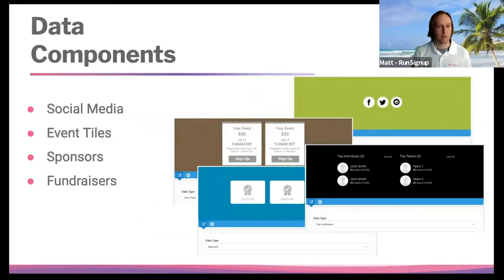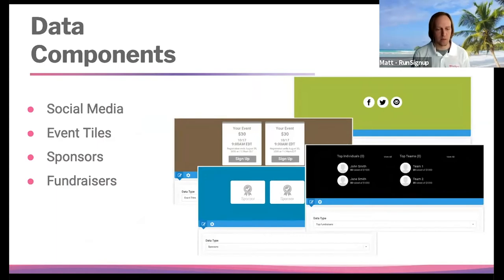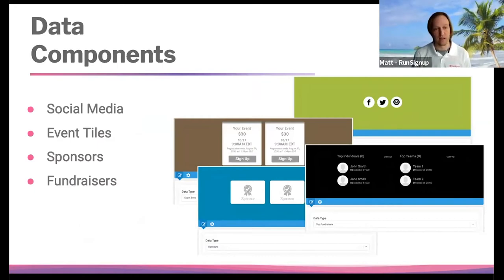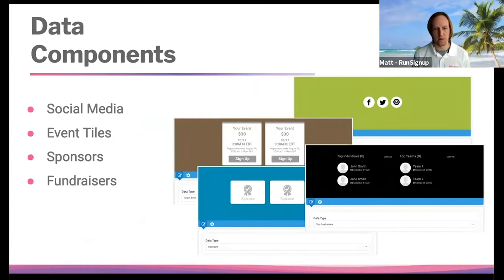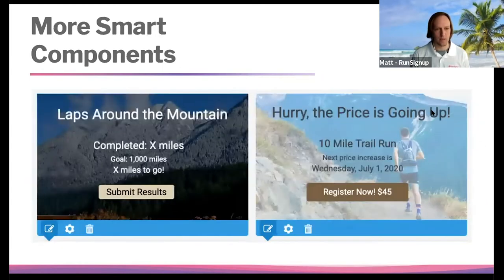Here are some examples of data components. Adding a social media data component is really nice to have. These preview images appear in light gray in the editor but will show in your color scheme when viewed live. You can customize and show event tiles, highlight a sponsor section, and add a fundraising component that updates in real time — that's a very popular one. Those are the key data components to add to your website.